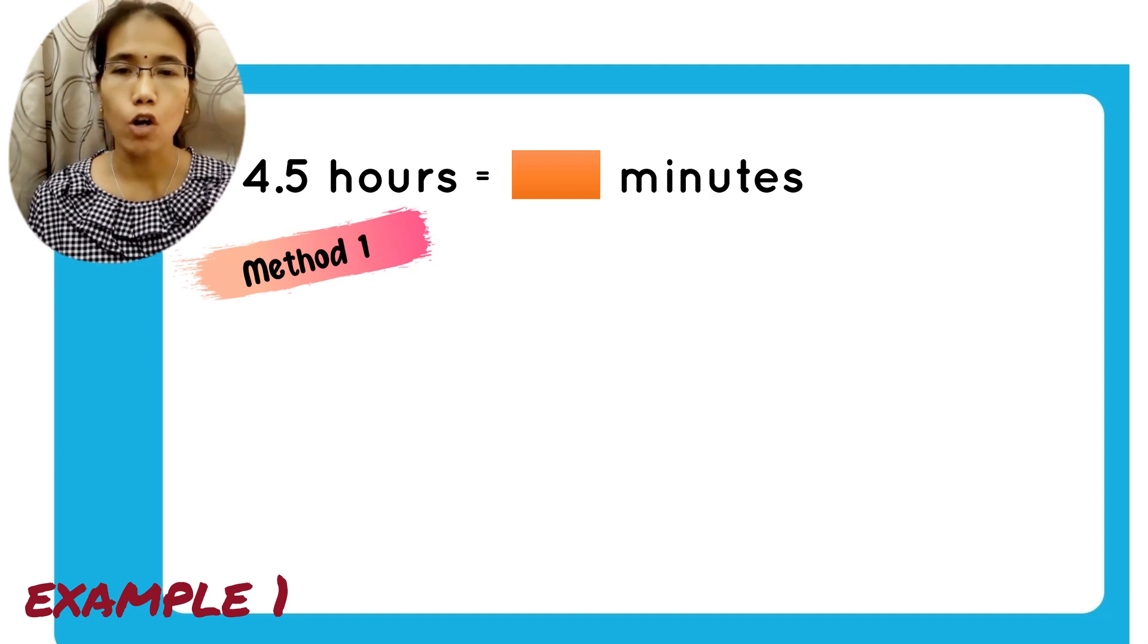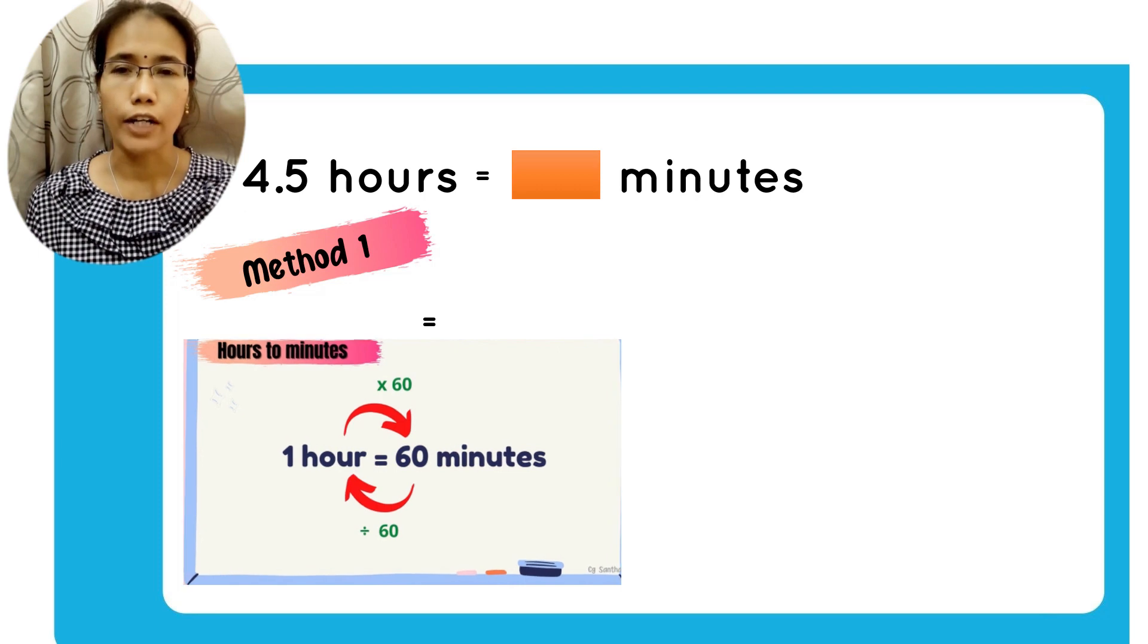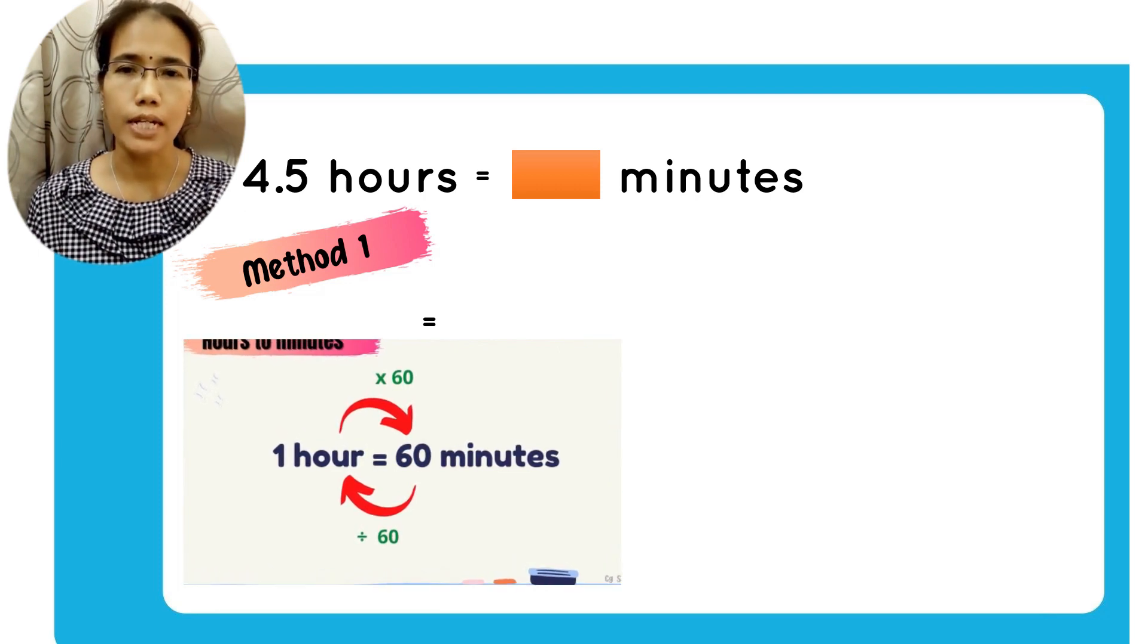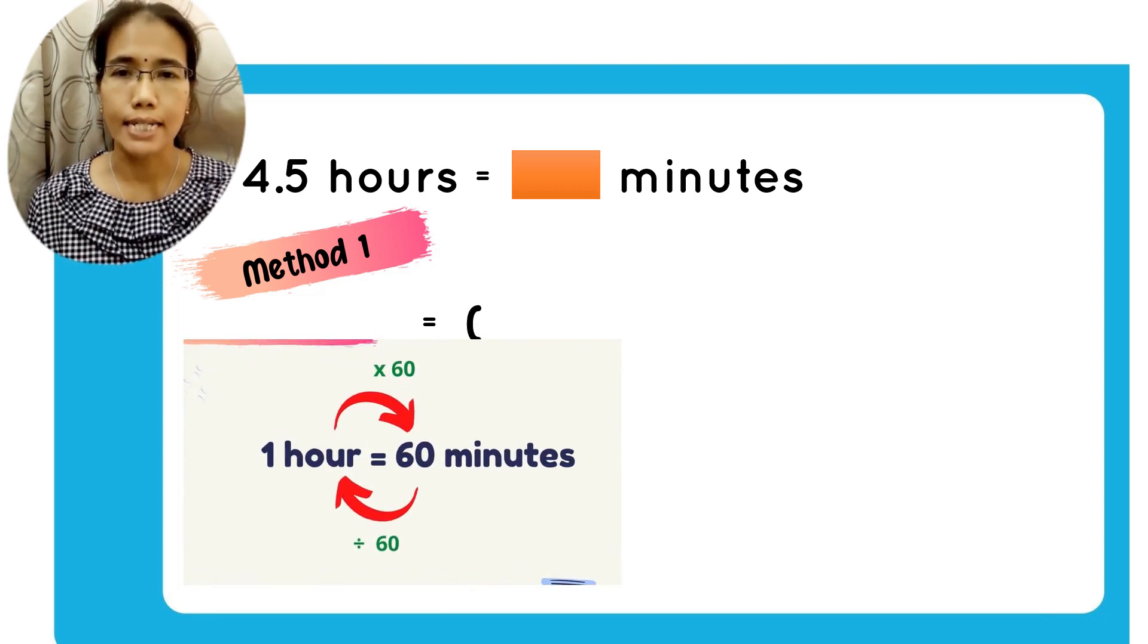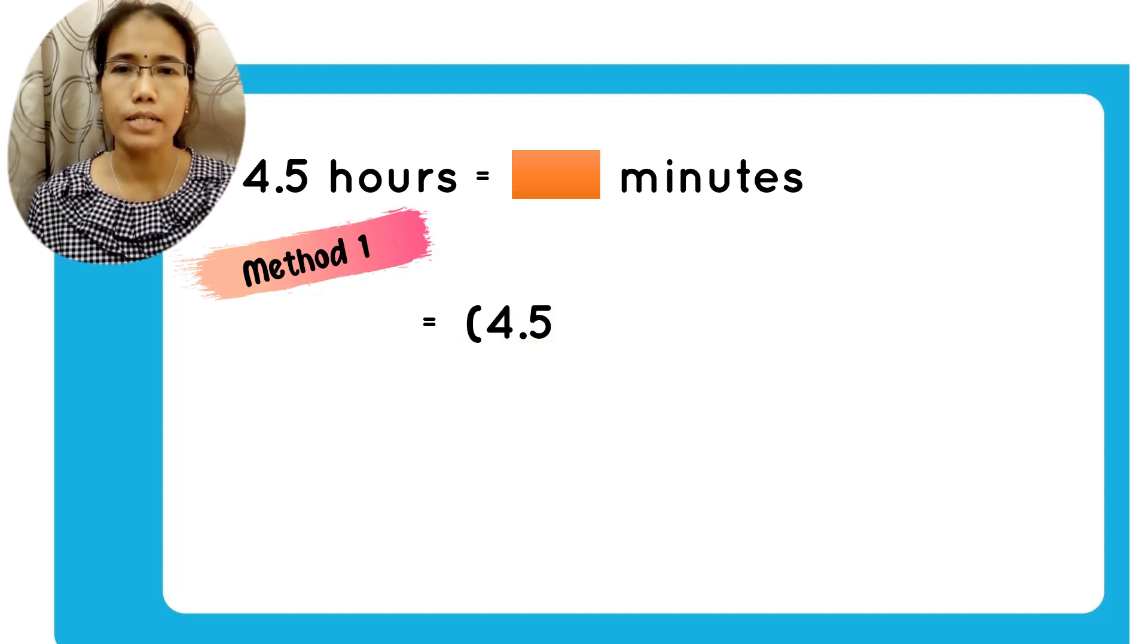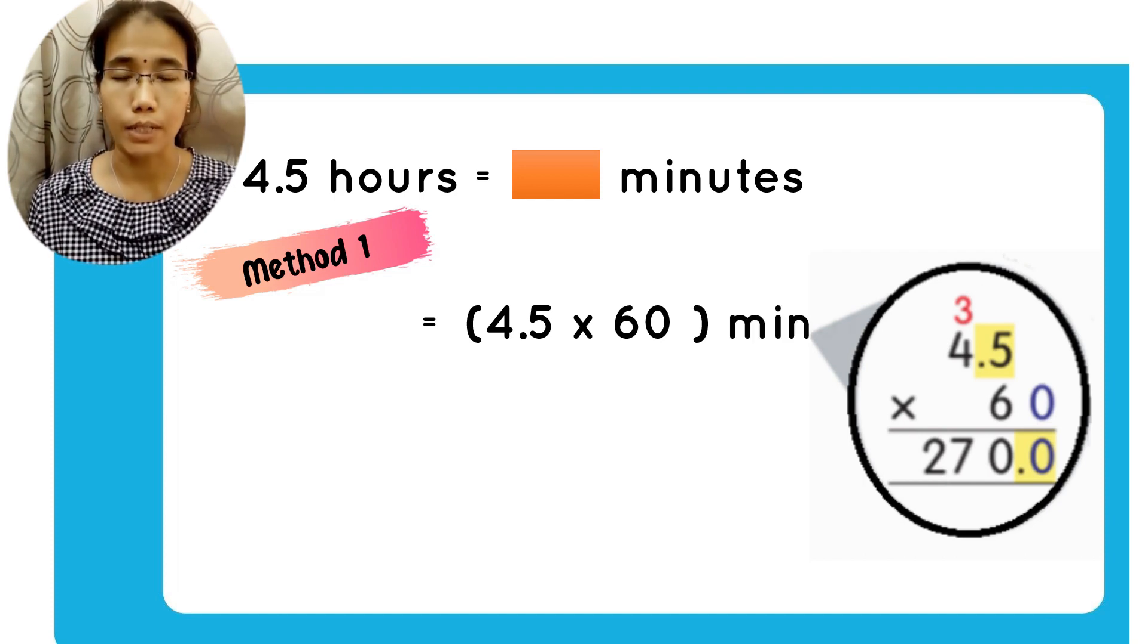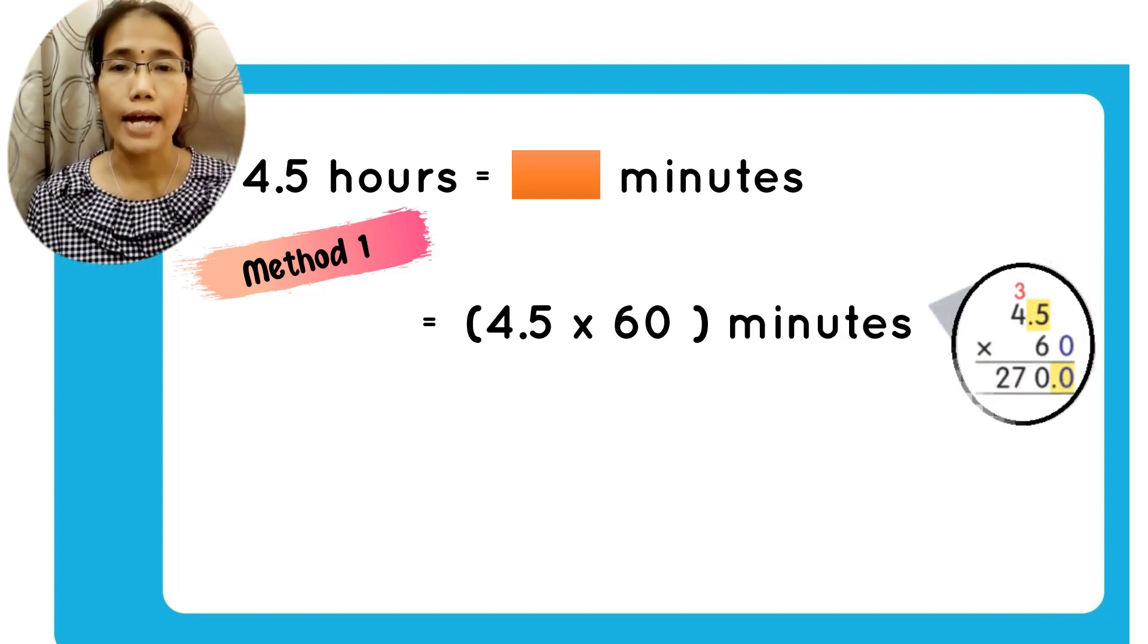First example, 4.5 hours convert to minutes. As you learned before, to convert hour to minutes, you have to multiply with 60. So, 4.5 multiplied with 60. You can just perform the normal multiplication involving decimal. You will get 270 minutes.